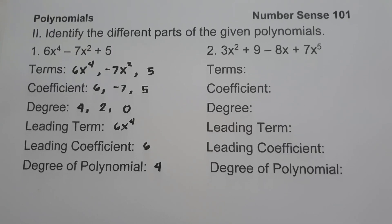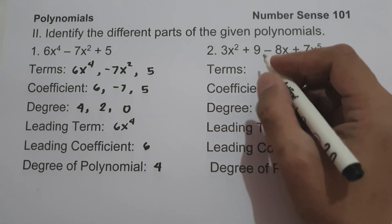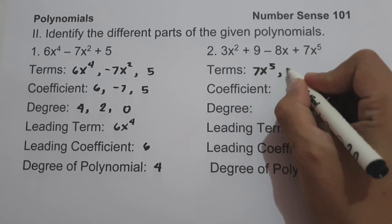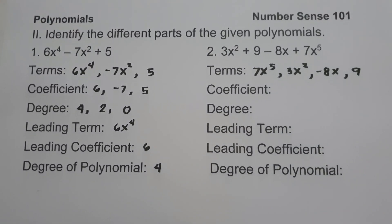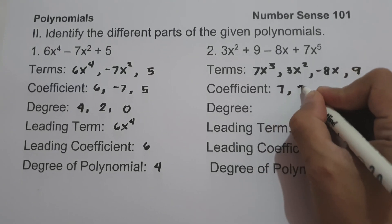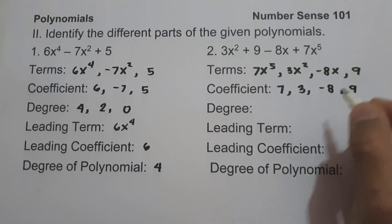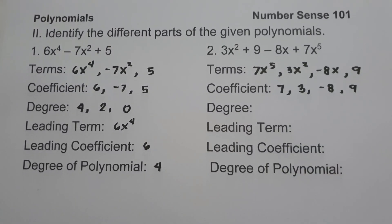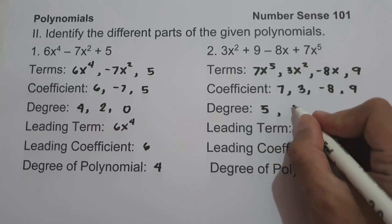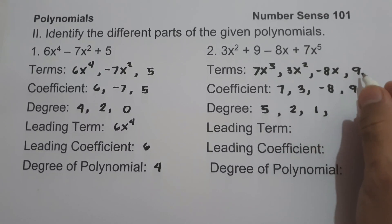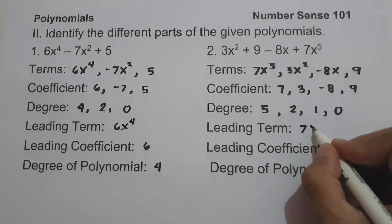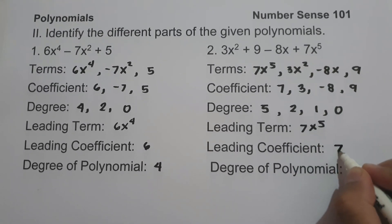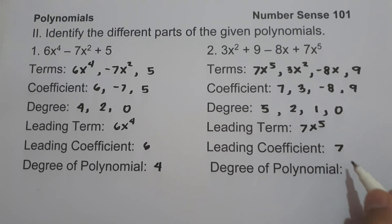Number 2: 3x squared plus 9 minus 8x plus 7x raised to 5. The different terms, arranged by degree, are 7x raised to 5, 3x squared, negative 8x, and 9. The coefficients are 7, 3, negative 8, and 9. The degrees of the terms are 5, 2, 1, and 0. The leading term is 7x raised to 5, the leading coefficient is 7, and the degree of the polynomial is 5.